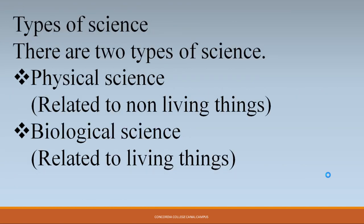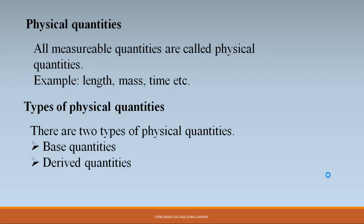Now let's talk about the types of science. There are two types of science: physical science and biological science. Physical science is related to non-living things, while biological science is related to living things. Our concern is with physical science, which deals with non-living things. Within physical science, we discuss physics — which is the study of nature.